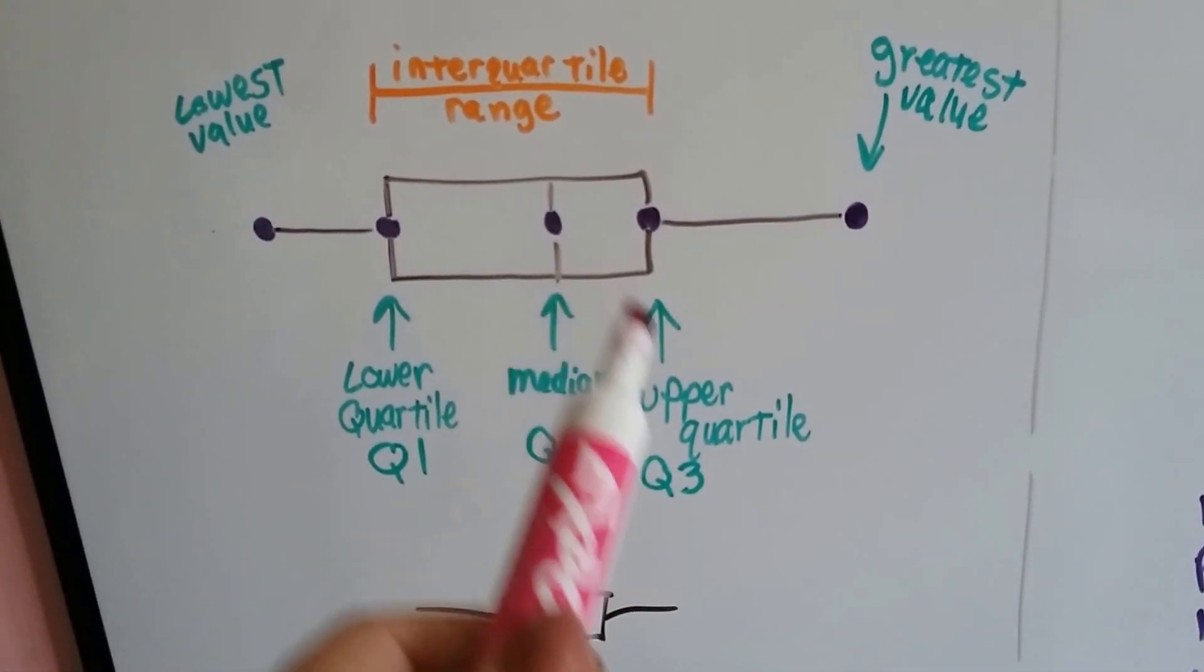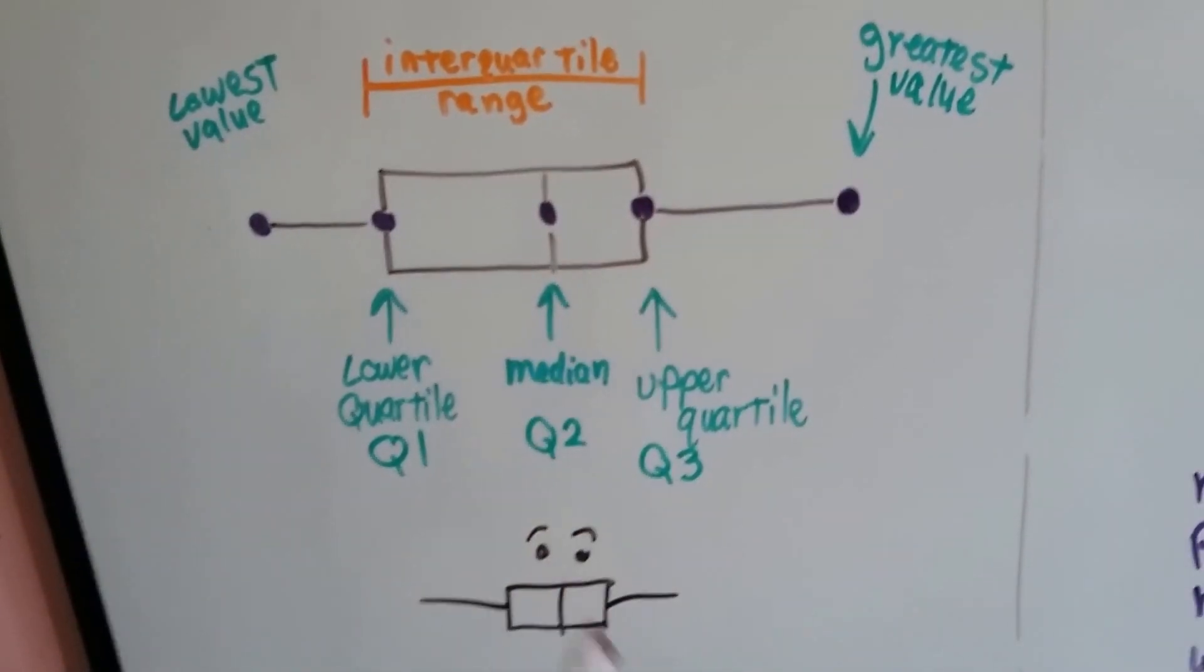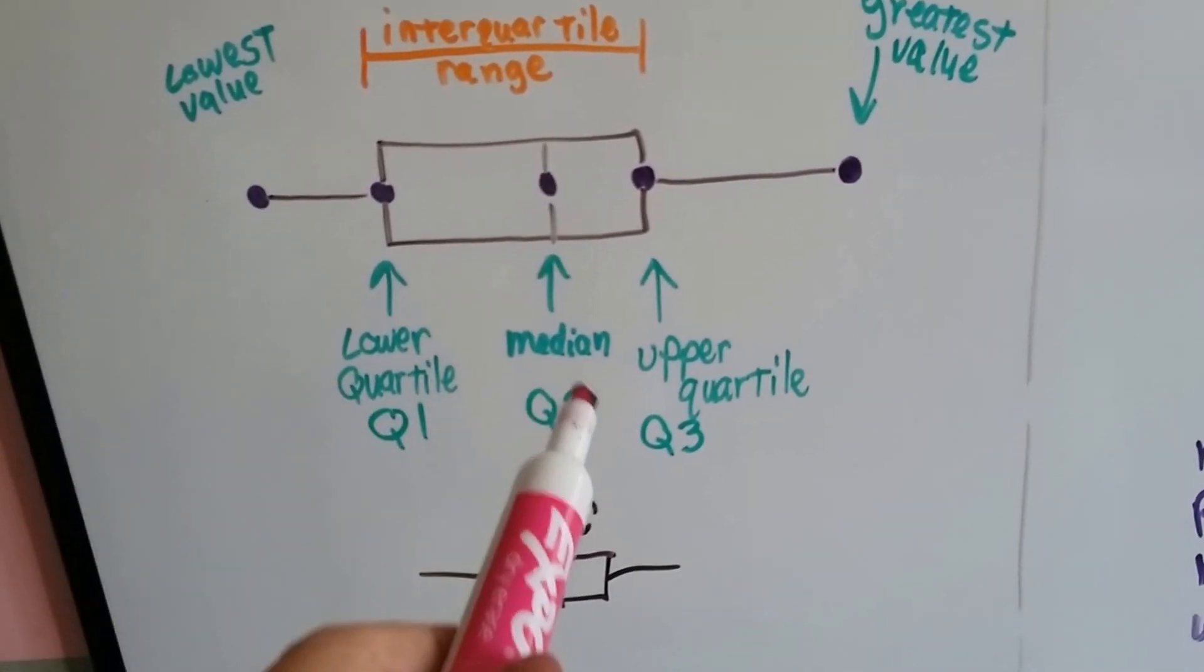The upper quartile, the Q3, is the average of the upper half values. And then we have our median, our middle number, that's Q2.